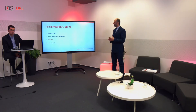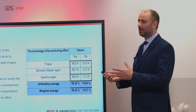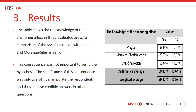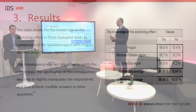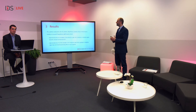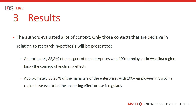Moving on to the results: the table shows the knowledge of the anchoring effect in three evaluated areas, comparing Vysočina region with Prague and Moravian Silesian region. This finding was not critical to verifying the hypothesis; its significance was to slightly manipulate the respondents and achieve credible answers in other questions. Approximately 88.8% of managers of enterprises with more than 100 employees in Vysočina region know the concept of the anchoring effect.